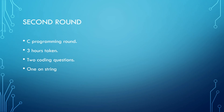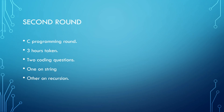One question was on strings. The input was a string consisting of alphabetical letters, and the output should be each alphabetical letter followed by its count in that string. For example, if the input string is A, A, A, A, B, B — the output would be A4, B2. The other question was on recursion.